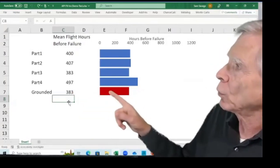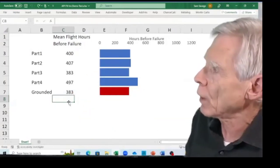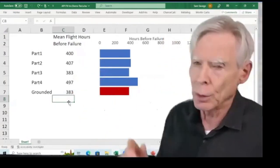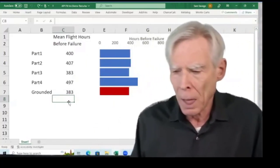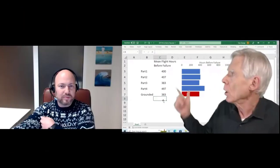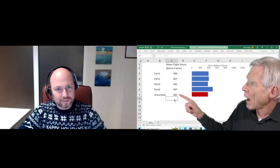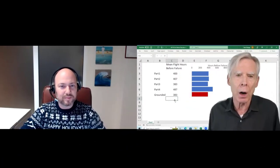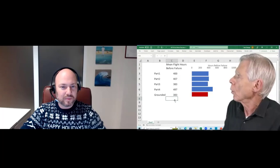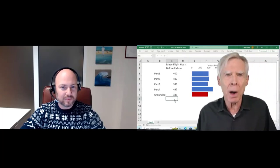The key of course is that these numbers are uncertain and we've plugged in the averages. So here's the problem. Notice that Part 3 has the lowest mean flight hours before failure of 383 hours, and so therefore we show the plane here grounded at 383 hours. But let's remember these are uncertain, so we've plugged in the averages, and by plugging in the average failure times we are stepping right on the land mine of the flaw of averages.